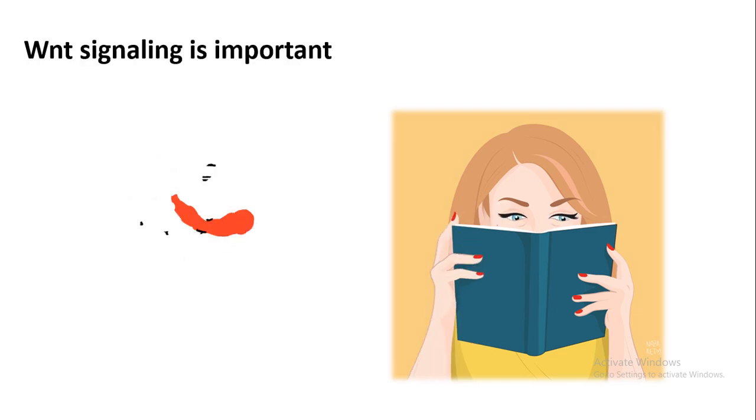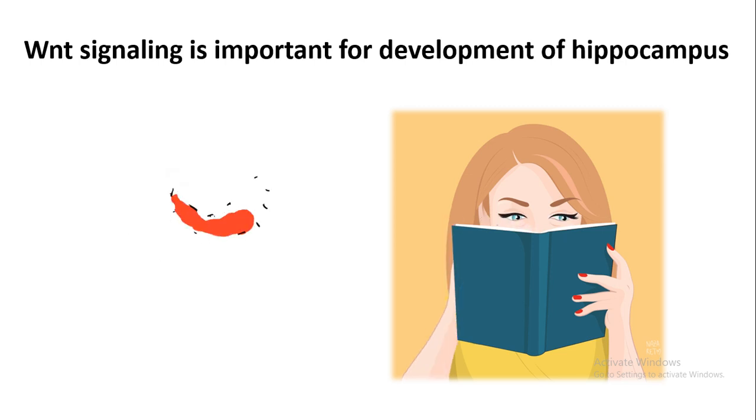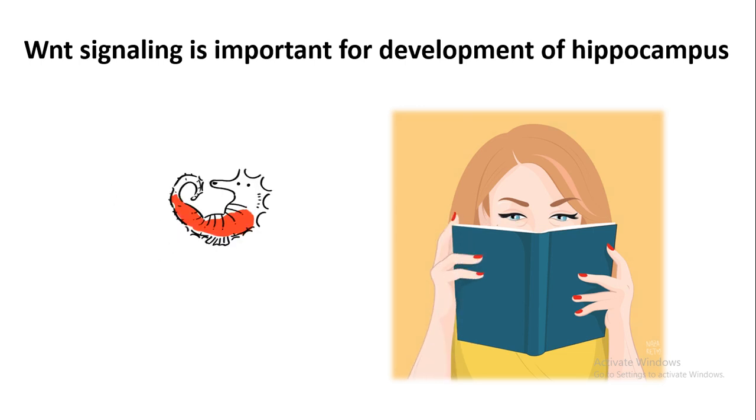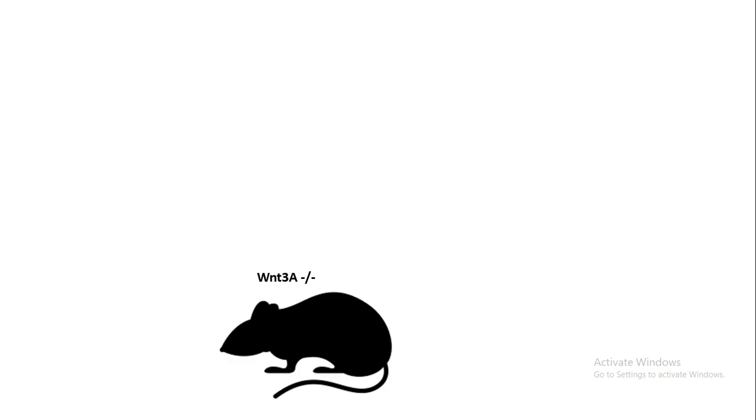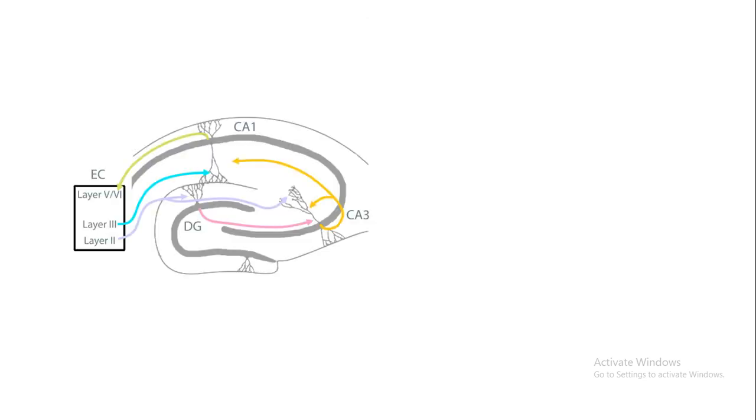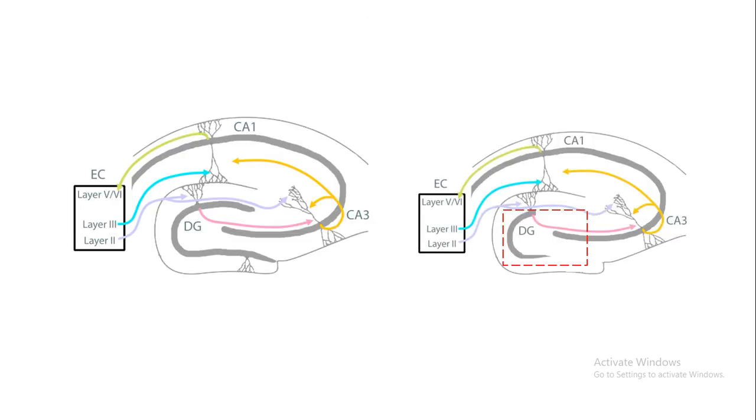It turns out that WNT signaling is also important for formation and patterning of the hippocampus, which is a seahorse-shaped structure in our brain important for learning and memory. In absence of WNT signaling, the hippocampus doesn't form properly. WNT3A is one important WNT, and WNT3A null mutant mice show aberrantly formed hippocampus. In other WNT signaling mutants, such as LEF1 mutants, it has been seen that the dentate gyrus of the hippocampus is severely reduced and malformed. This means WNT signaling is one of the most important players for formation and proper functioning of the hippocampus.